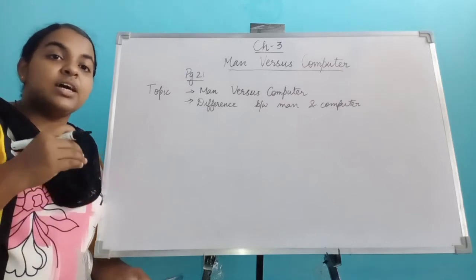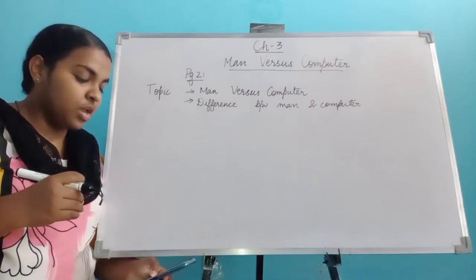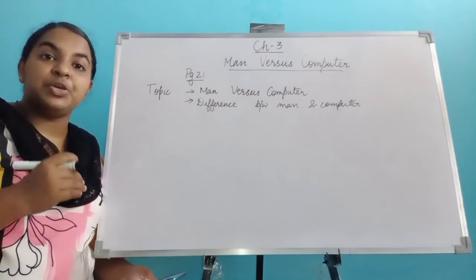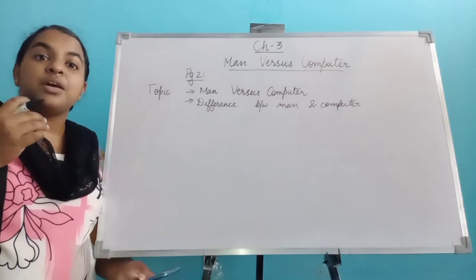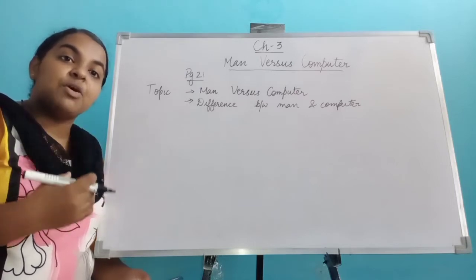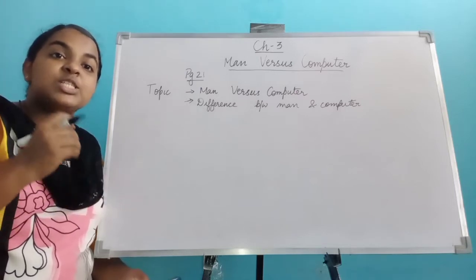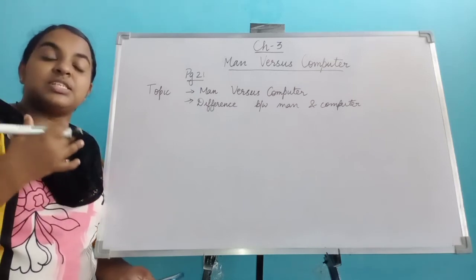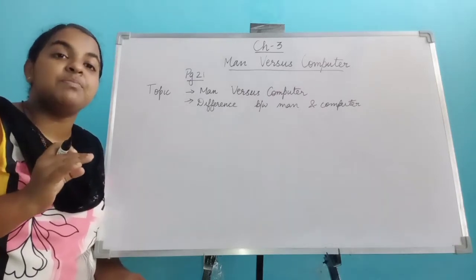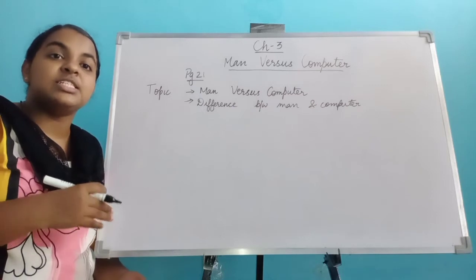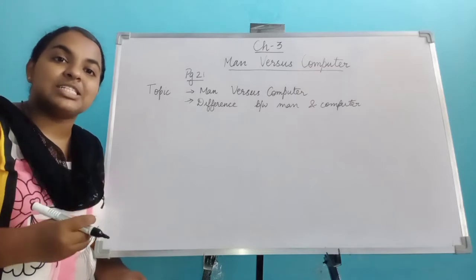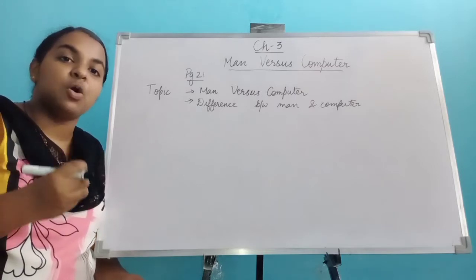Now let's see the answer given by the girl. She says: 'Computer only works according to the instructions given by humans.' A computer is a machine in which man gives instructions, and it works based on those instructions. Without the instructions given by a man, our computer is a dumb machine — it is useless without instructions from a human being.